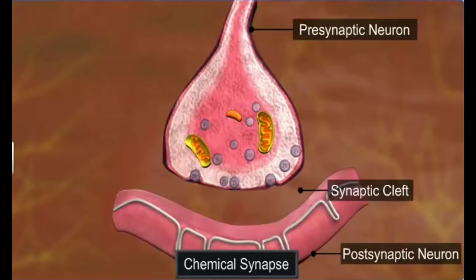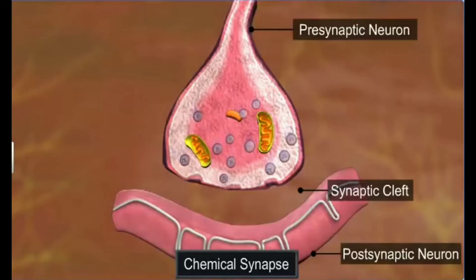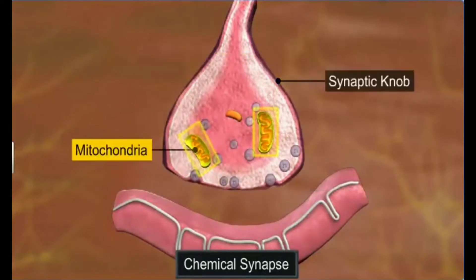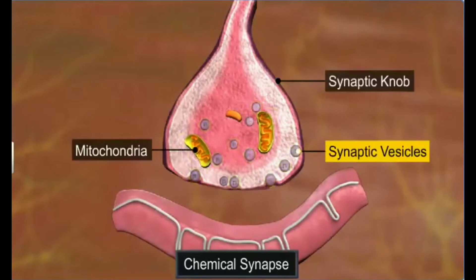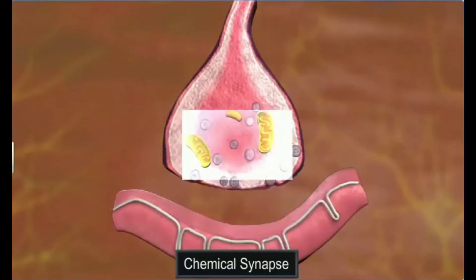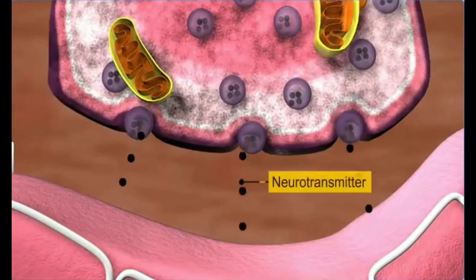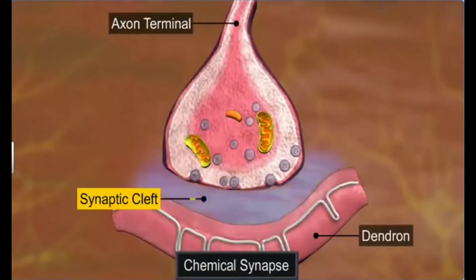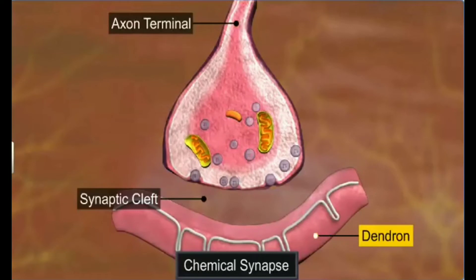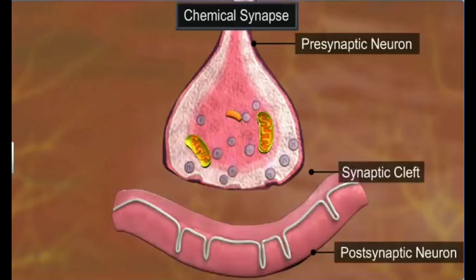The pre-synaptic neuron ends with a synaptic knob. A synaptic knob has a large number of mitochondria and many synaptic vesicles. Each synaptic vesicle contains neurotransmitter chemical molecules such as acetylcholine. The synaptic cleft is a fluid-filled gap between the axon terminal and the dendron of another neuron, so there is no protoplasmic continuity between neurons.